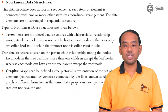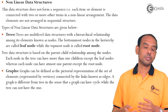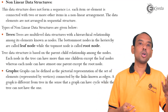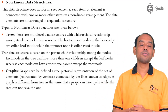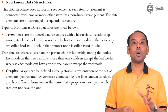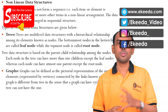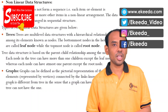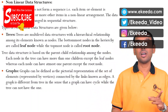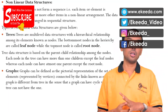Graphs are a pictorial representation of a set of elements. They do not follow a tree structure. The key difference between a graph and a tree is that a graph can have a cycle, whereas a tree does not have a cycle.